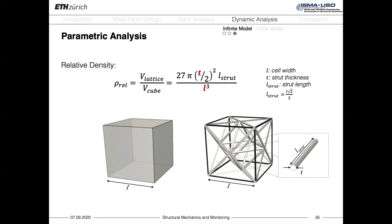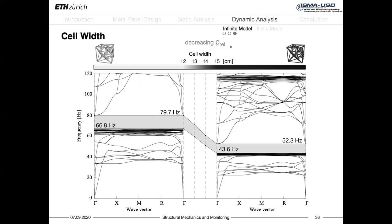We start by increasing the width of the cell from 12 cm to 15 cm, and therefore reducing the relative density. In this case, the frequency of the band gap is shifted towards lower values. This happens because a wider cell is characterized by longer and therefore more flexible struts whose bending natural frequency is pushed towards lower ranges. I showed before the formula of the bending natural frequency of the struts.